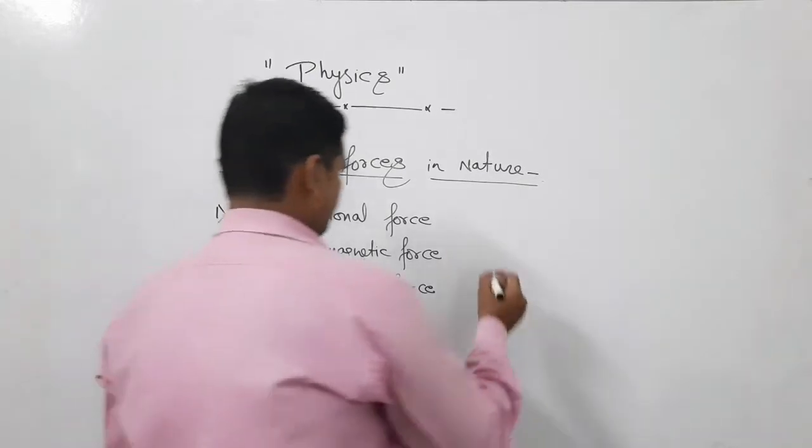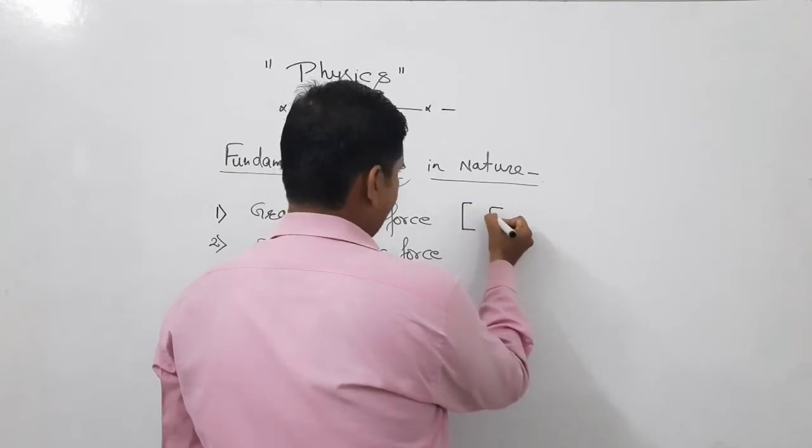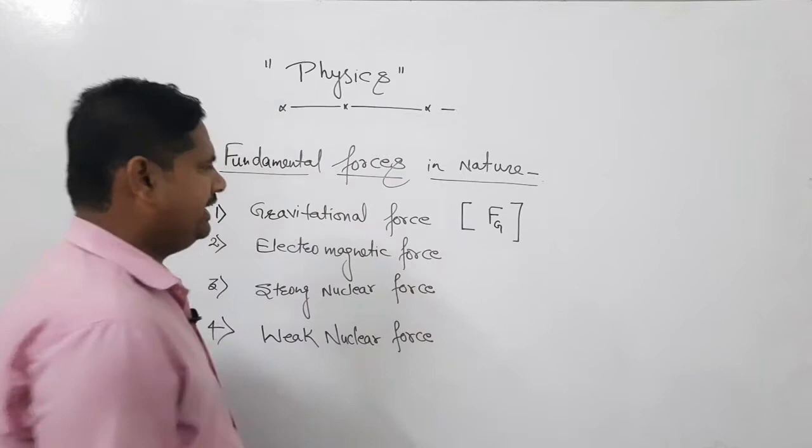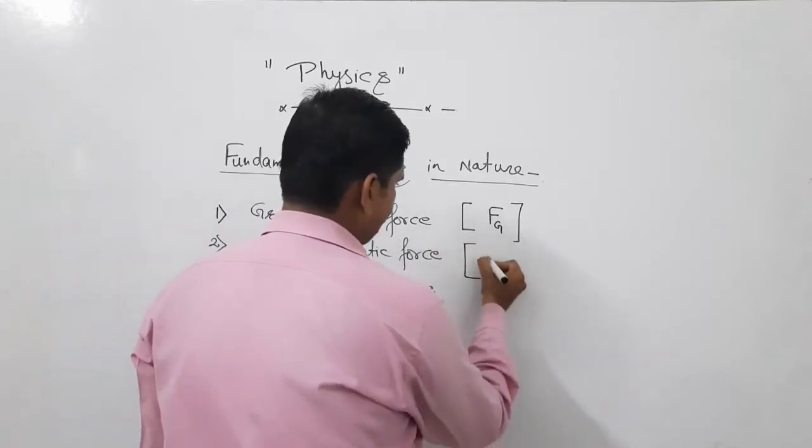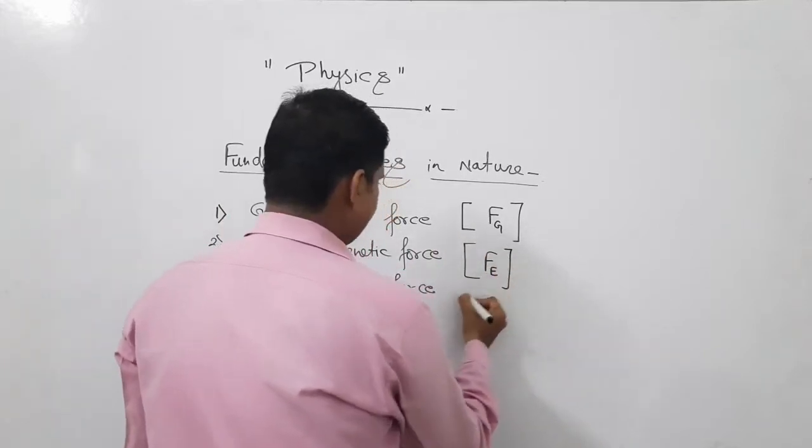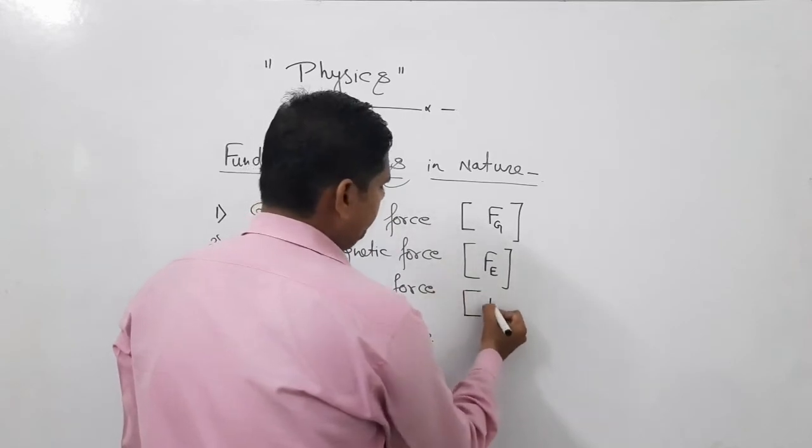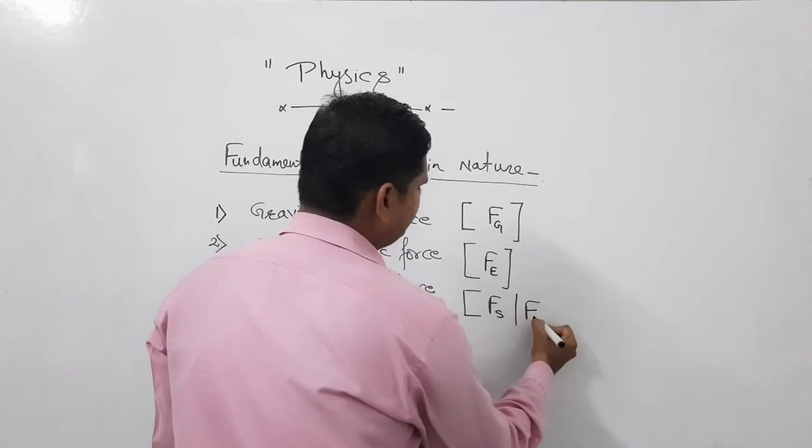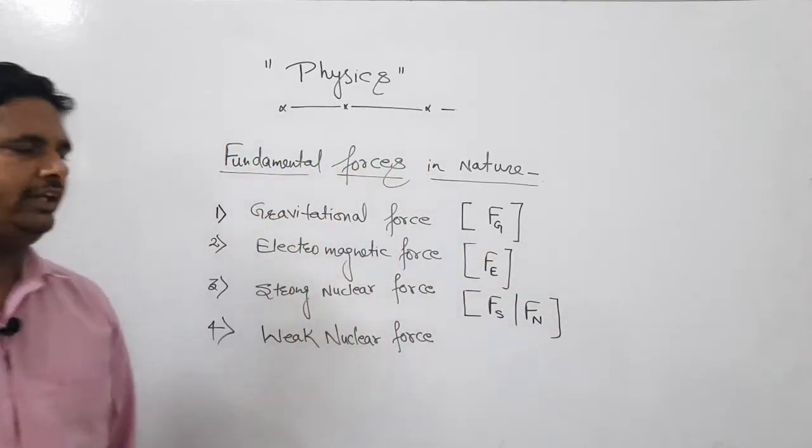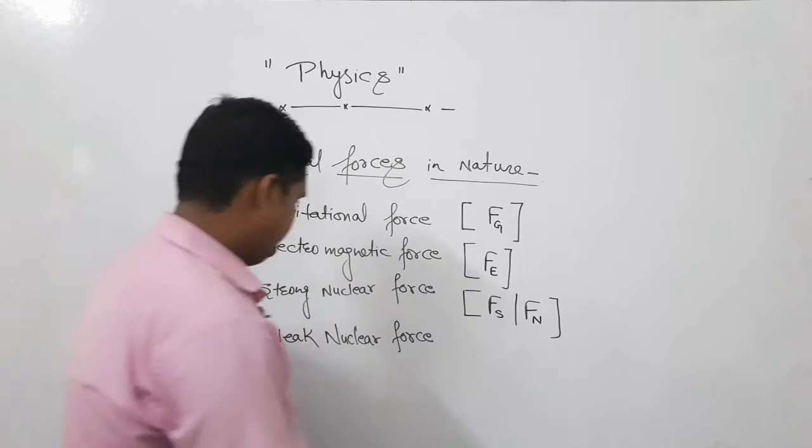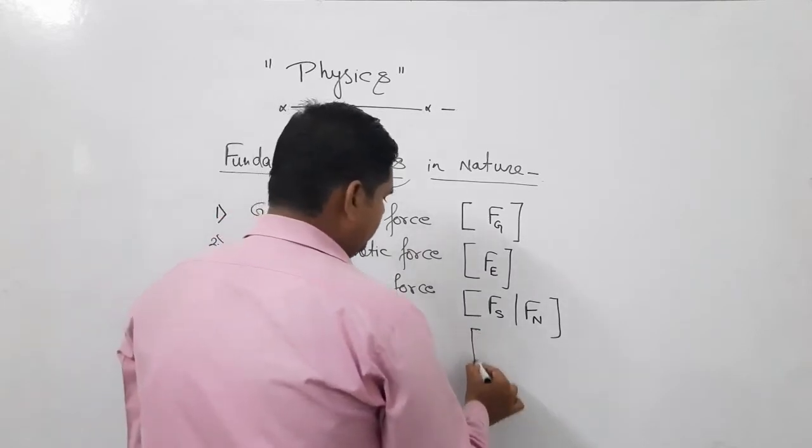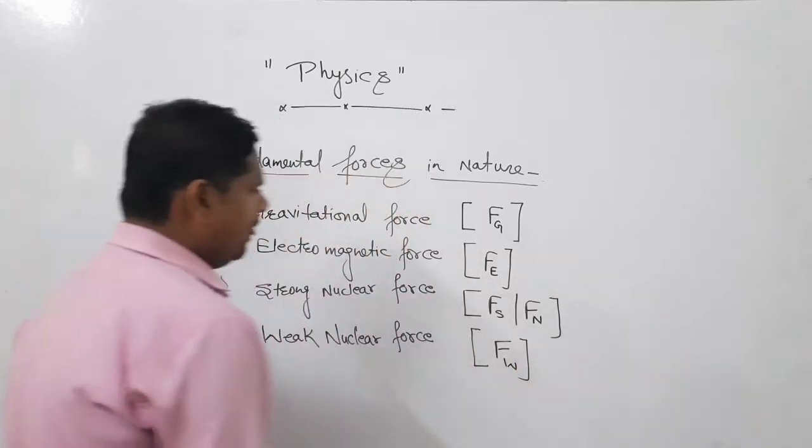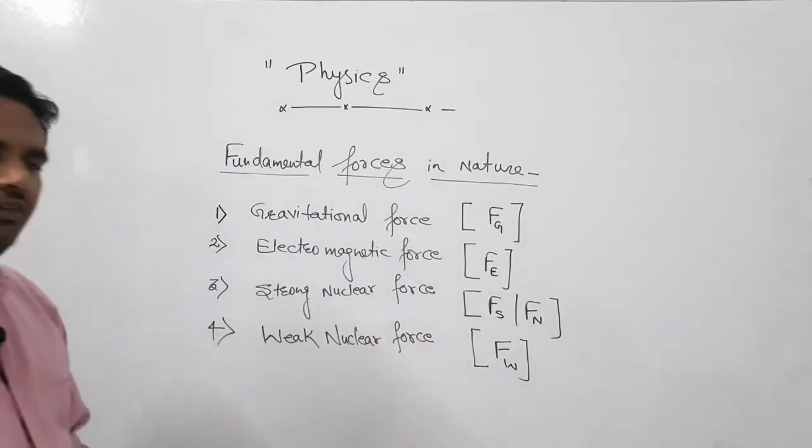Gravitational force we can denote by Fg. Electromagnetic, as name suggests, Fe. Next one is strong nuclear force, Fs, or can be denoted as Fn. And weak nuclear force we denote as Fw. These are the four fundamental forces of nature.